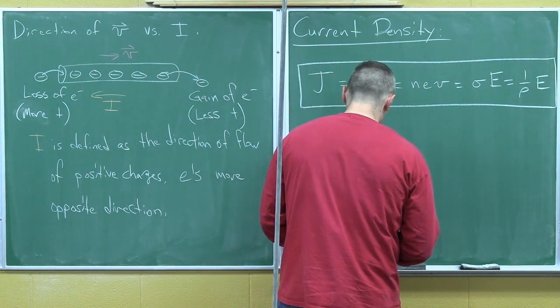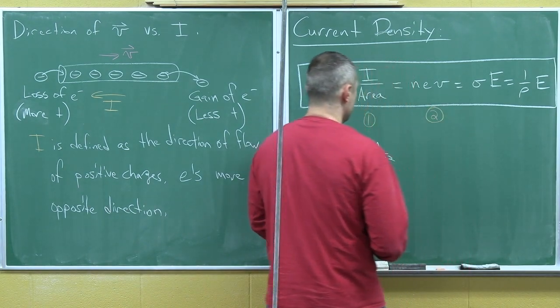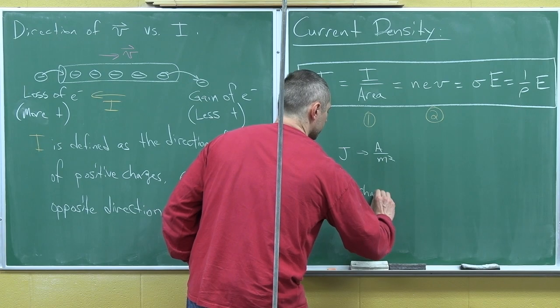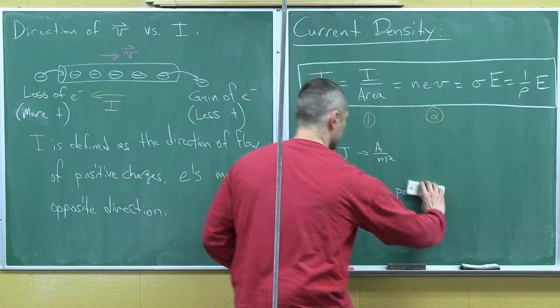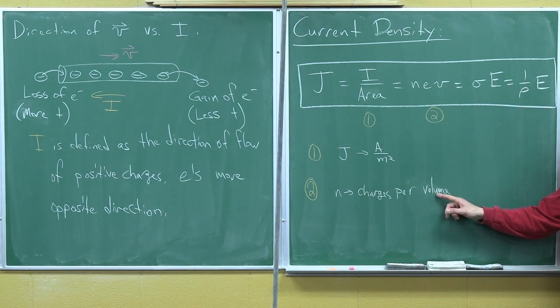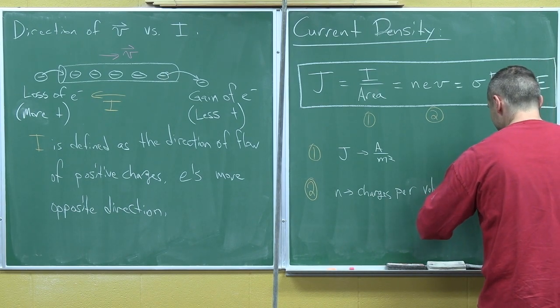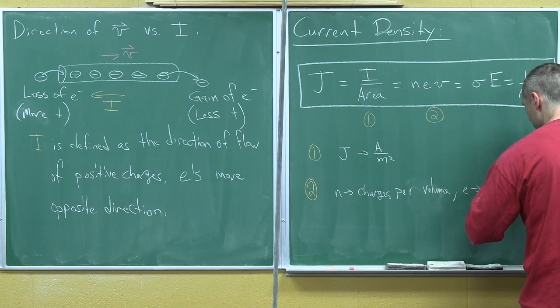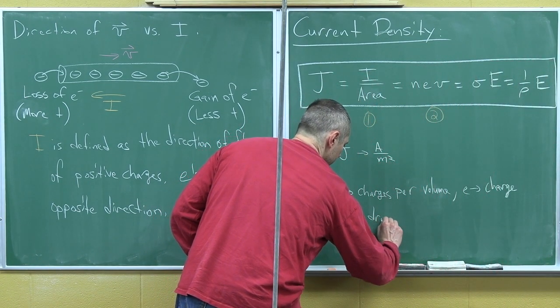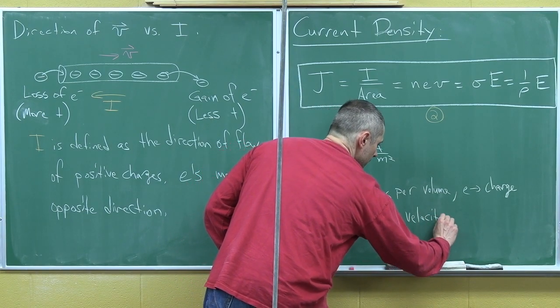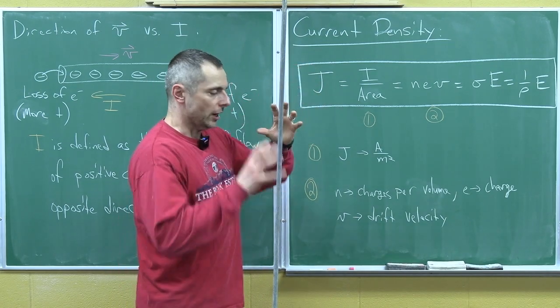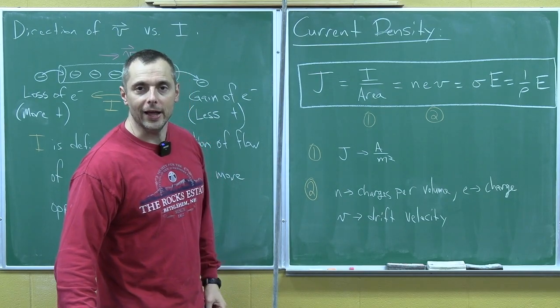So no problem here. This, in equation two, N is charges per volume, I didn't want to write V because then you might think it's voltage, charges per volume, E is the charge, like the charge of an electron, 1.6 times 10 to the minus 19, and V, little v, is the drift velocity. So that's another way to define current density. The more charges you have, and the faster they move, the more charges per meter cubed, the faster they move, the more current density you have. It kind of makes sense intuitively.